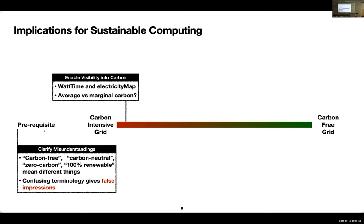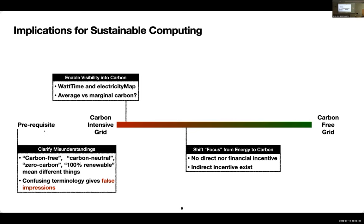Once we have that consensus, we need tools that allow us to reduce operational carbon. Companies like Watt Time and Electricity Map are enabling visibility into the carbon footprint of applications by providing average or marginal carbon emission values. Beyond that, we need to shift focus from energy efficiency to carbon efficiency. There is currently no direct financial incentive to reduce carbon — everything in computer science is motivated by economic gains. It's surprising that computer science may be the only science driven primarily by economic incentives, unlike chemistry, biology, or physics.